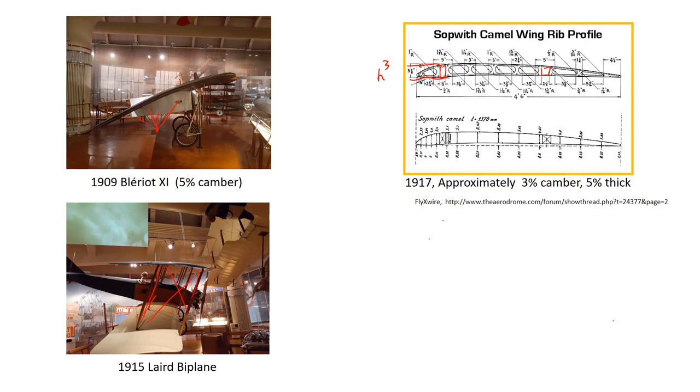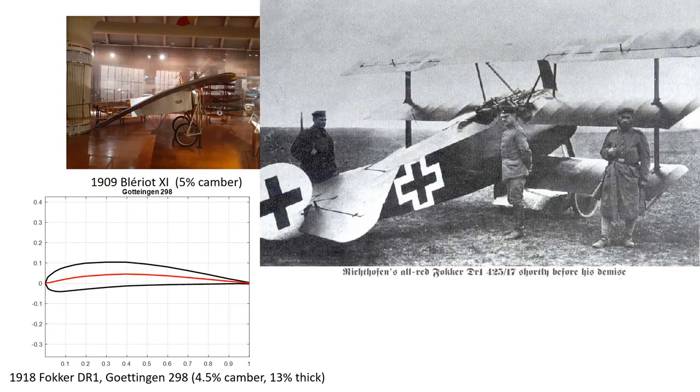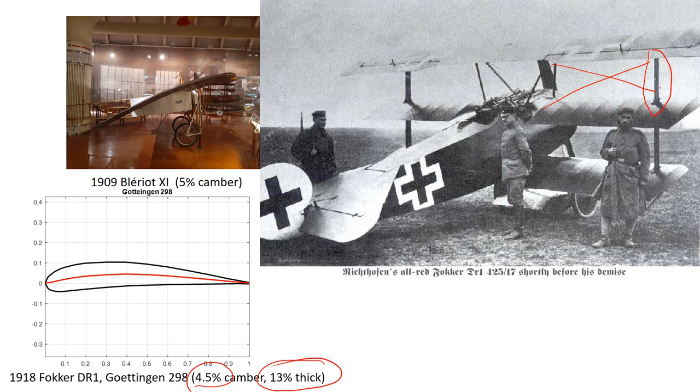about 1918 when Prandtl at the University of Göttingen came out with the Göttingen 298 airfoil, which had a camber similar to the Sopwith Camel. But instead of being 5% thick was 13% thick. This is a big fat deviation from state-of-the-art. But what that enabled them to do is build an airplane without all the wires. If you look, there's just these struts to connect the wings and no cross-bracing wires. And the prototype of the triplane didn't even have those struts. It was strictly a cantilevered wing.